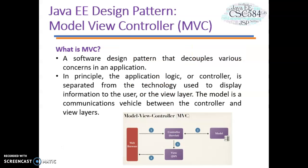We also have a data source that represents a data source implementation, and a transfer object class that represents a data carrier which the DAO may use to return data to the client. Let's look at another Java EE design pattern: model view controller, or MVC. MVC is a software design pattern that decouples various concerns in an application. The application logic or controller is separated from the technology used to display information to the user, or the view layer. The model is a communication vehicle between the controller and view layers. It is a powerful and effective way of designing applications that separates the UI from data access and data manipulation logic. It adds some extra complexity to application design but provides enormous benefits to application stability, functionality, and testability.